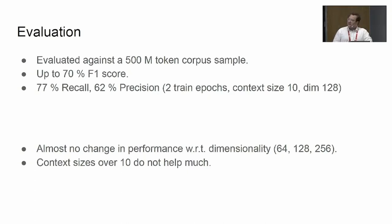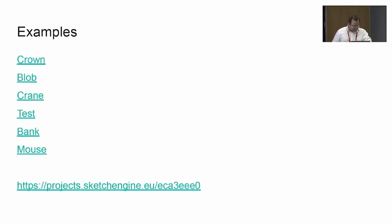So we evaluated this against the 500 million token corpus sample, and the best we can do is approximately 70% F1 score. Maybe the best model we identified gives 77% recall, which is already quite good, but we can get up to 88%, but then the precision suffers too much. What might be interesting is that the dimensionality of the model doesn't have a strong influence on the result. I believe it is because the embeddings do not need to encode the semantic information as is the case for standard fast text embeddings where there are mixed multiple meanings for a single token. Also, context size of 10 words to each side for the disambiguation step is quite enough.